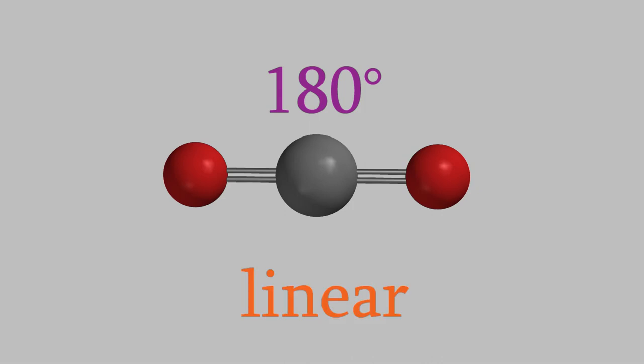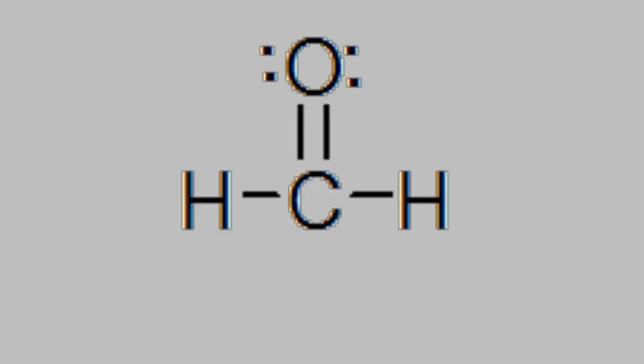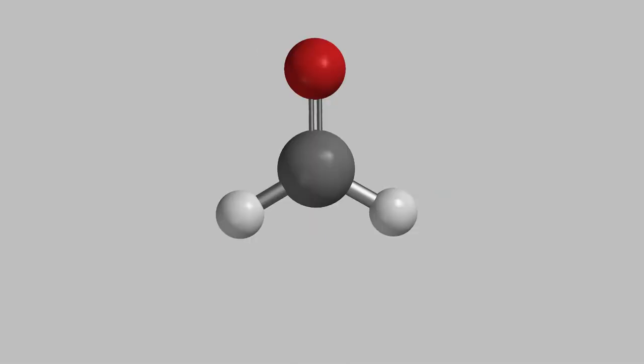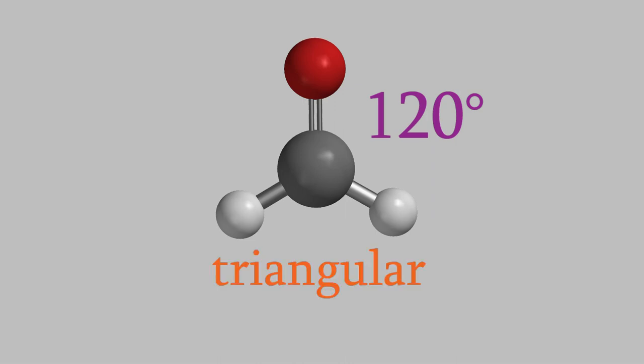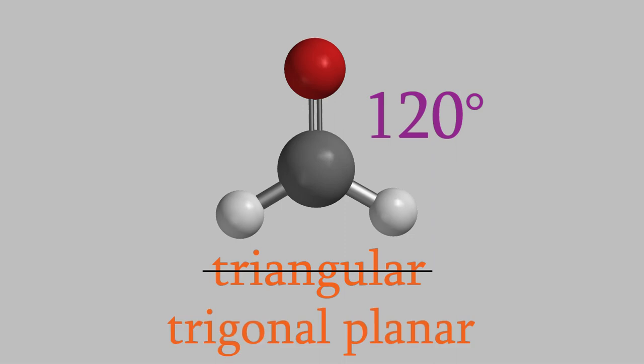What if we have a molecule with three bonds on the central atom, as in formaldehyde? Here's the Lewis structure of formaldehyde. Once again, the bonds get as far apart as possible, which means the angle between each of them is 120 degrees. You might think we'd call that shape triangular, but we're way fancier scientists than that, so we call it trigonal planar.